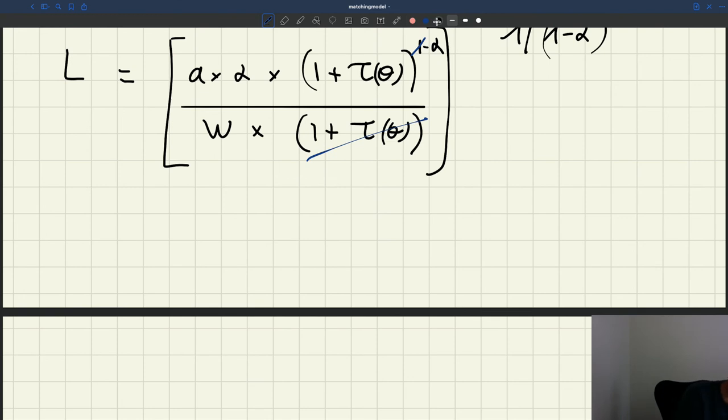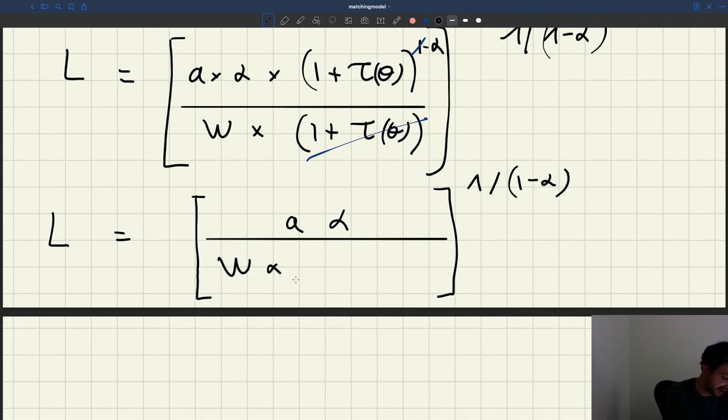Then once you do that, you can rewrite L as [a times α]^(1/(1-α)). Here I have w and here I have a (1 + τ(θ)) to the power of 1-α that was in the numerator. I can do it in the denominator as (1 + τ(θ)) to the power of α.